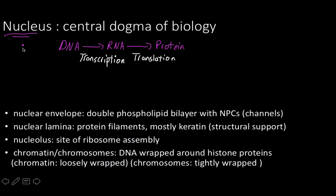The nucleus structurally is made up of a nuclear envelope, which is a double phospholipid bilayer with nuclear pore complexes — channels that control what comes in and goes out. Because it's a phospholipid bilayer, it has nonpolar and polar ends. The nuclear lamina is also part of this structure: a dense protein filament network underlying the envelope that provides structural support.